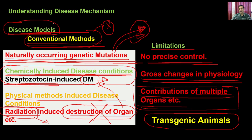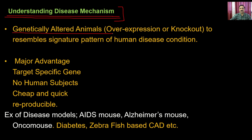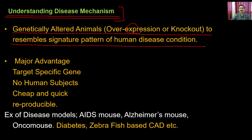Once you develop the disease model, you can understand the mechanisms of various processes or use that model for compound screening. The transgenic approach involves genetically altered animals — either by overexpression or knockout — that resemble the signature pattern of a particular disease condition. With conventional approaches, you may not be able to replicate the precise signature pattern of human disease because human and animal metabolism can differ significantly.